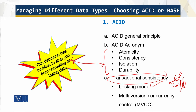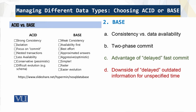Let's compare ACID versus BASE. With ACID, there is strong consistency and isolation is ensured. With BASE, there is weak consistency and availability comes first. ACID focuses on commit. We are looking at consistency versus data availability because it is tunable. Every client sees all updates written to the primary node — the data needs to lock until all read replicas are up to date. This is called two-phase commit.